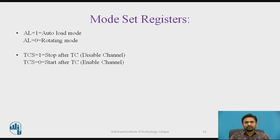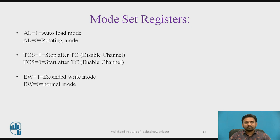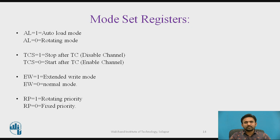The next flag is TCS: if TCS equals 1, it represents stop after terminal count, disabling the channel; otherwise it enables the channel. Next, the D5 bit EW: if EW equals 1, it represents extended write mode; if EW equals 0, it indicates normal mode. The D4 bit RP: if RP equals 1, it represents rotating priority; if RP equals 0, it represents fixed priority.